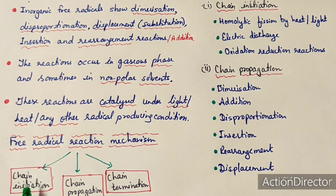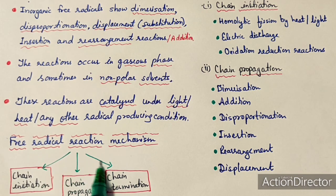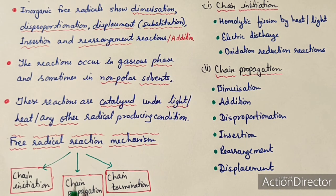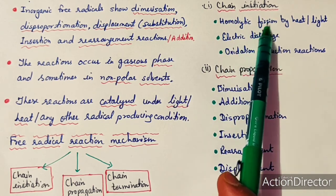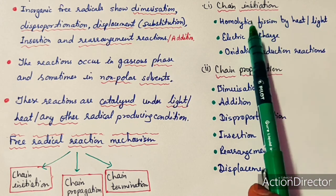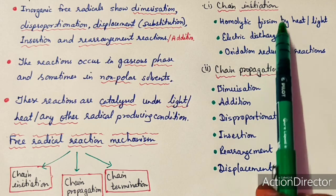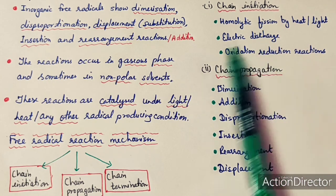The free radical reaction mechanism can be classified into three parts. The first step is chain initiation, the second step is chain propagation where a number of reactions occur, and then chain termination where the product is obtained. Chain initiation is the homolytic fission of a molecule by thermal or photochemical processes to generate the radicals. It can also be done through electric discharge or oxidation-reduction reactions.